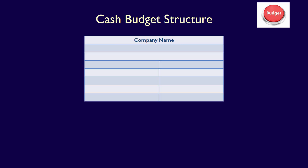How is a cash budget structured? As always, we start with the company name, the name of the budget — cash budget — and the period covered. Cash budgets might be monthly, quarterly, or even annually. We then move on with the body of the budget, starting with the expected beginning balance, which is the opening cash balance. We then add in all the cash receipts: cash that the organization expects to receive during the period from outside sources.